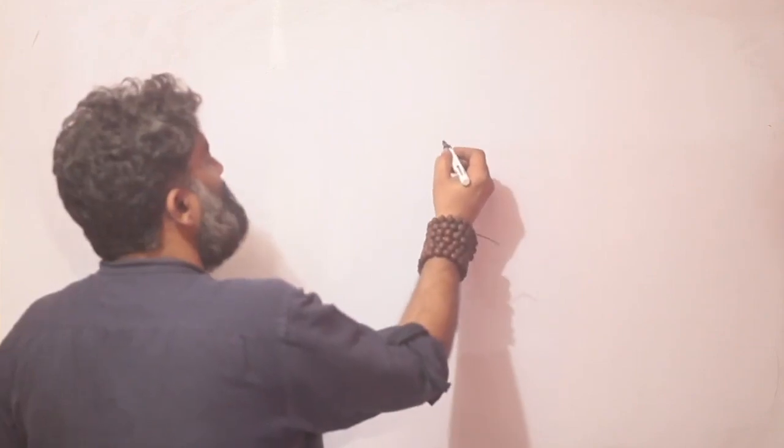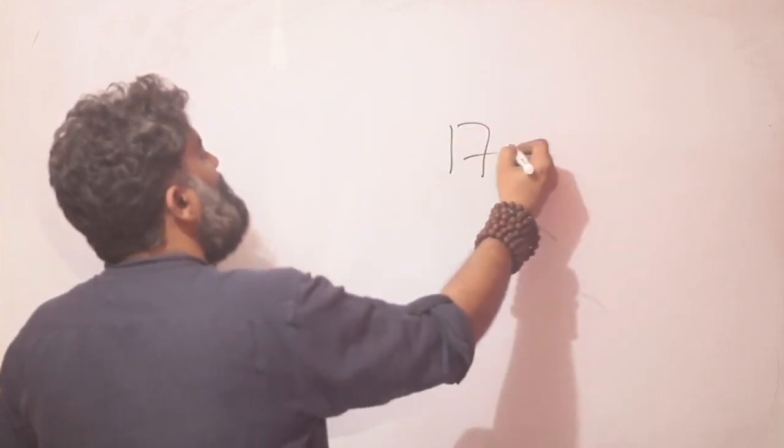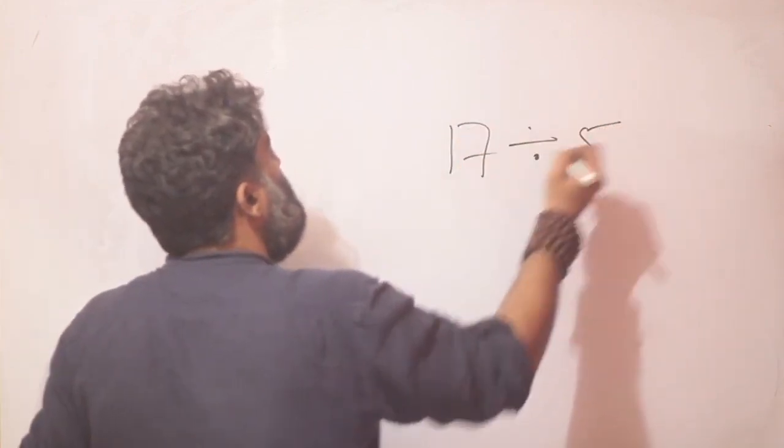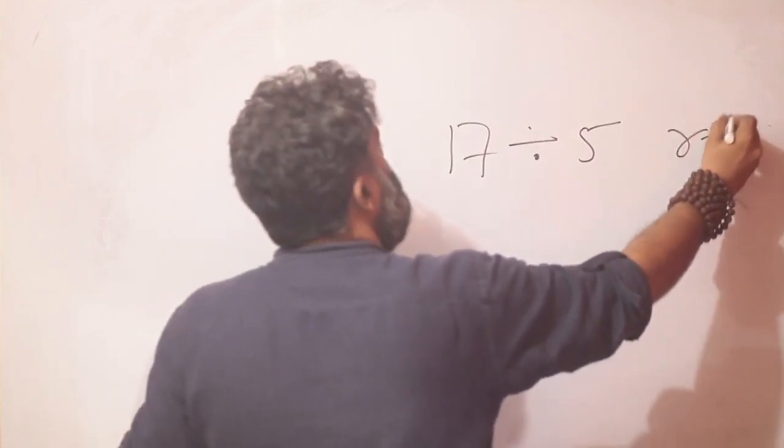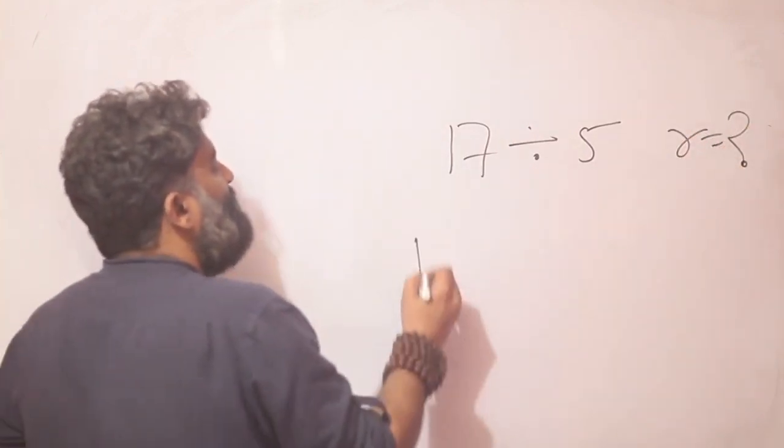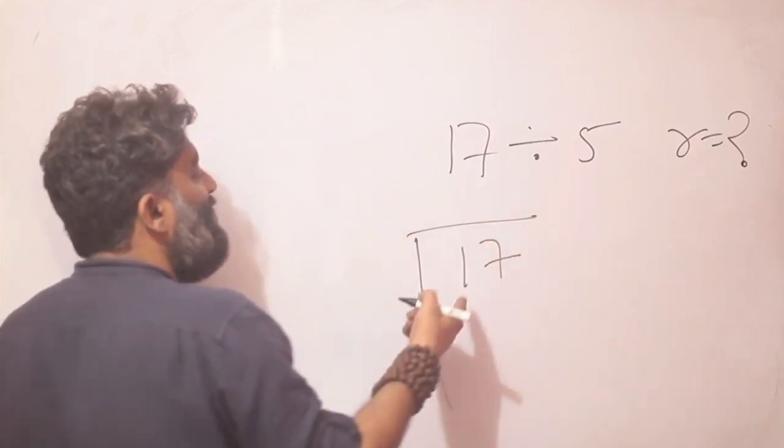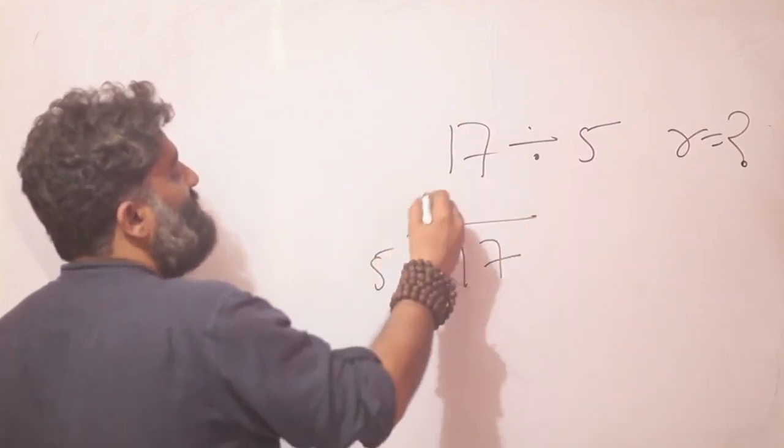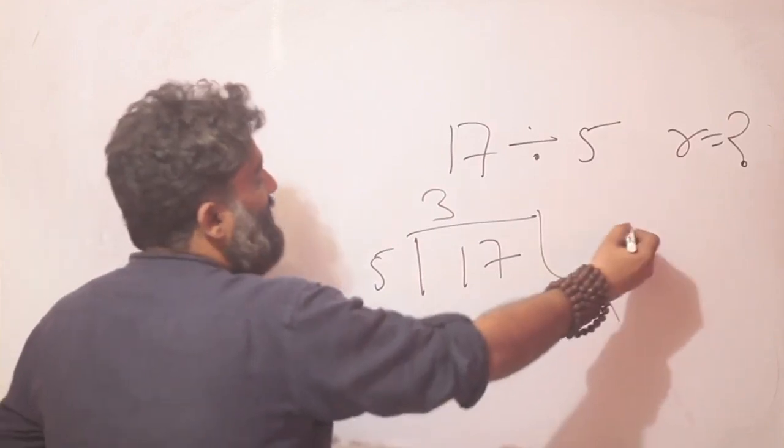So I say 17 divided by 5 and tell me what is the remainder. All of us know and most of us should be doing it like this: 5 threes are 15, they might be writing it here.